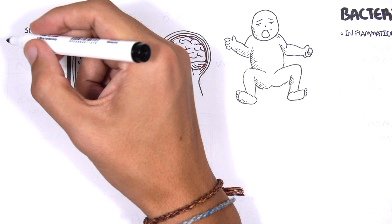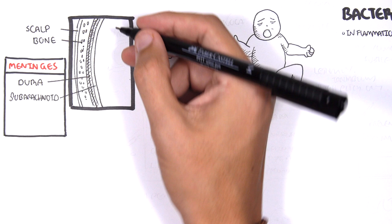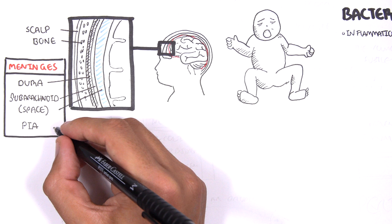Then we have the meningeal layers which include the dura mater, the arachnoid membrane, the subarachnoid space which contains the cerebrospinal fluid, and then the pia mater before we actually have the brain tissue itself. In bacterial meningitis, the bacteria irritate the meninges, these layers, causing inflammation.